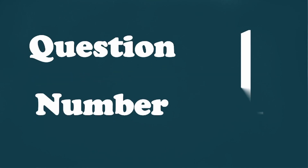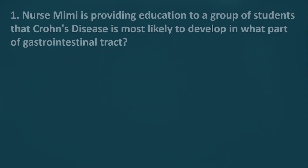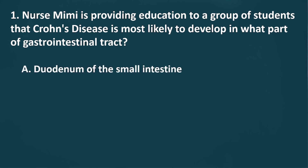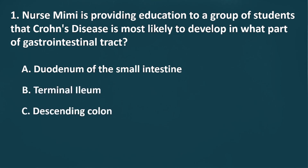Question Number 1: Nurse Mimi is providing education to a group of students that Crohn's disease is most likely to develop in what part of the gastrointestinal tract? A. Duodenum of the small intestine. B. Terminal ileum. C. Descending colon. D. Rectum.